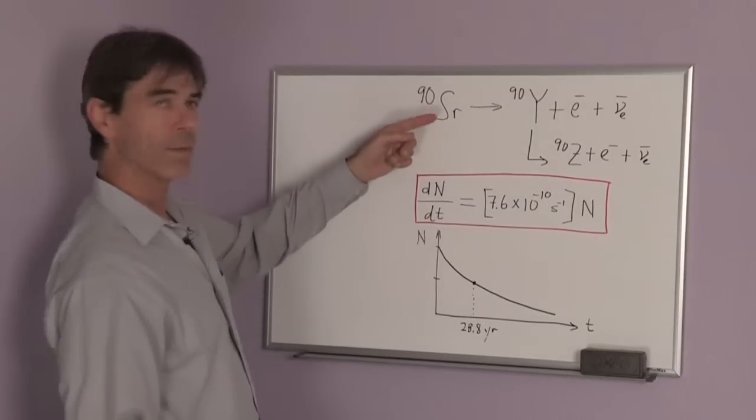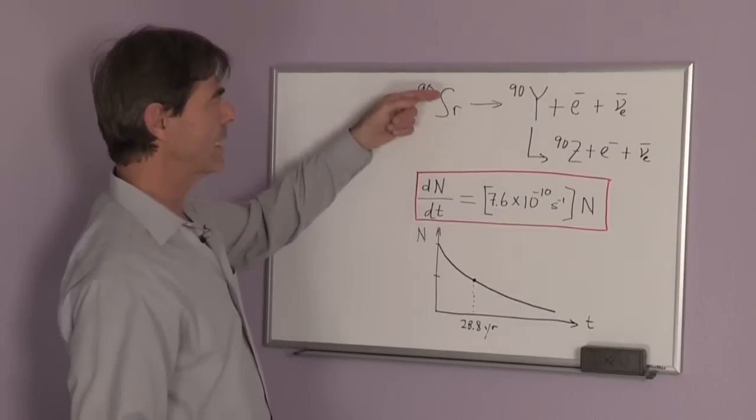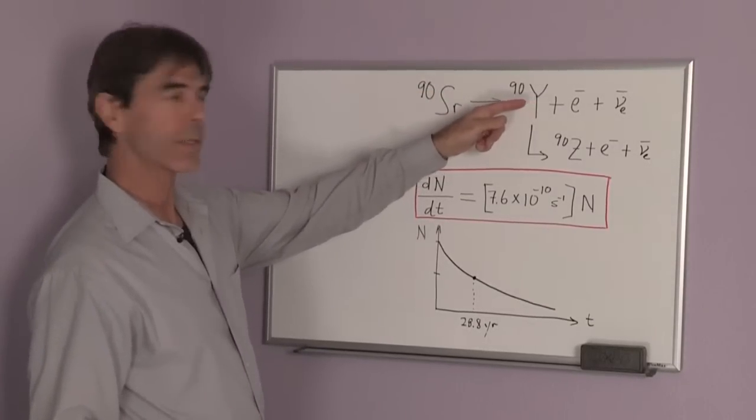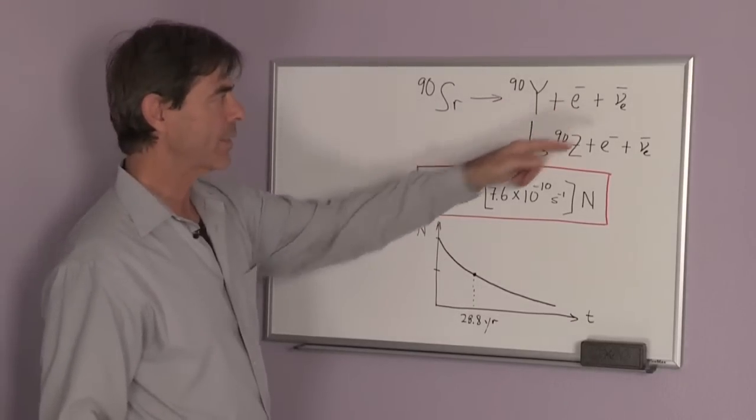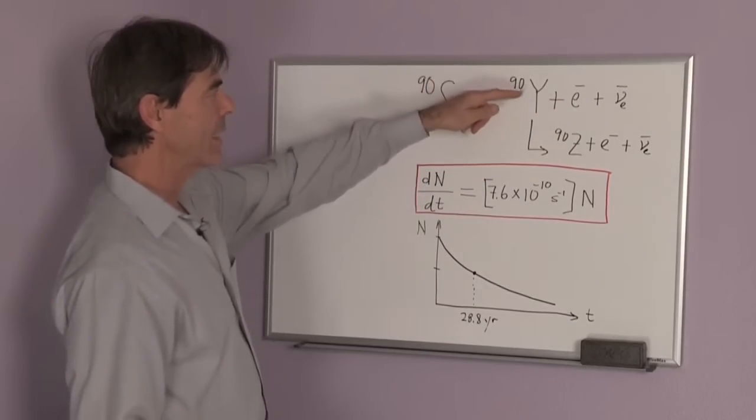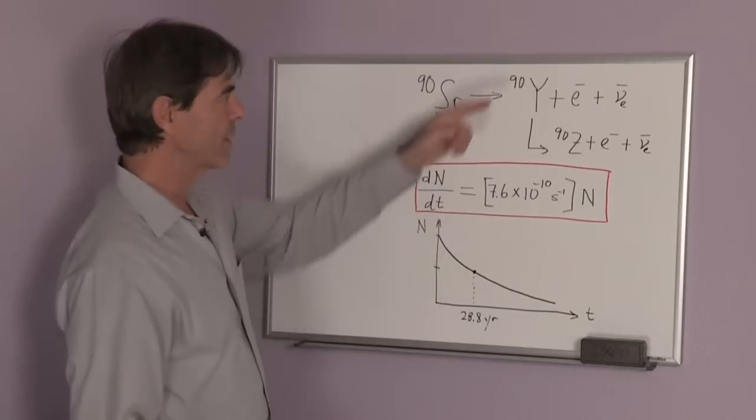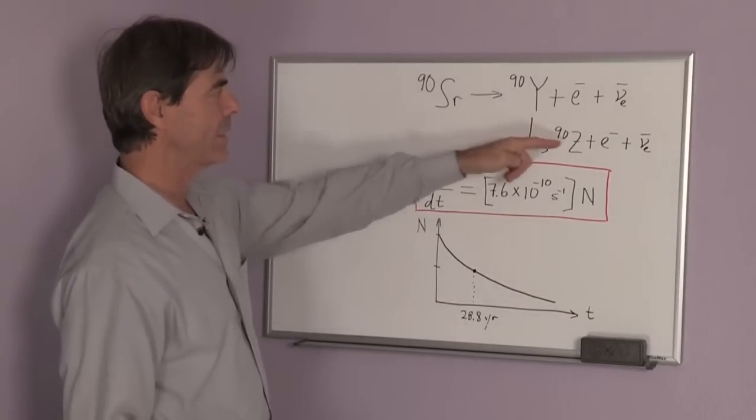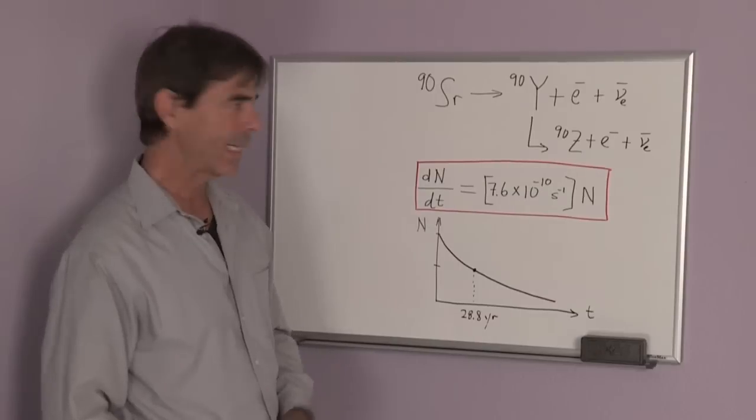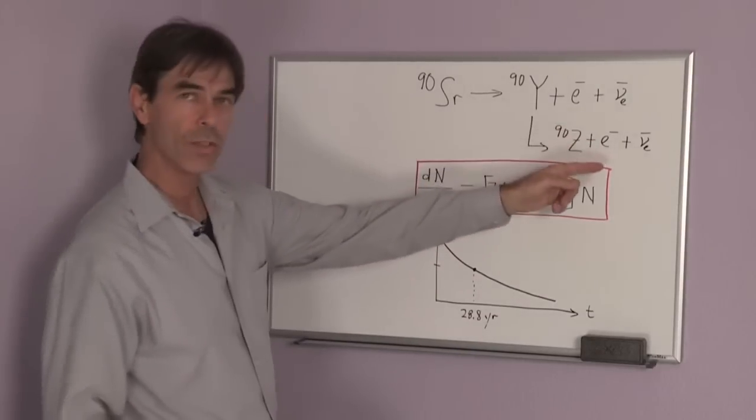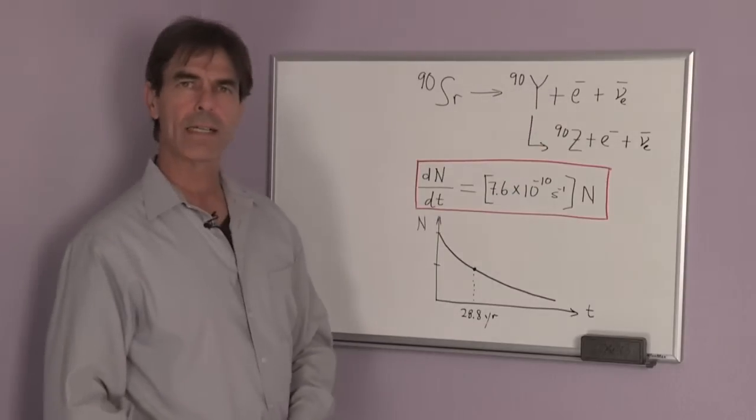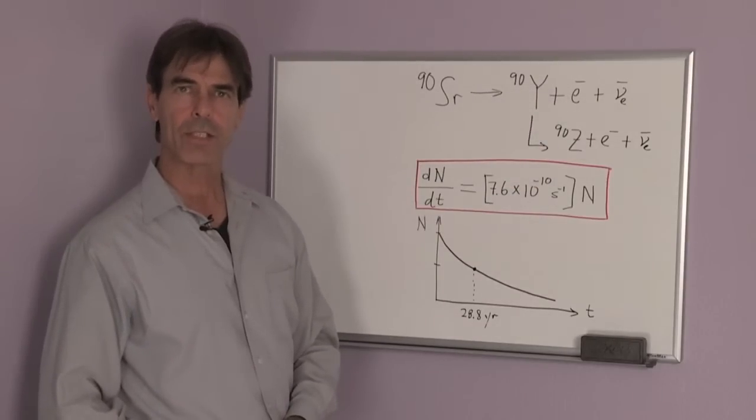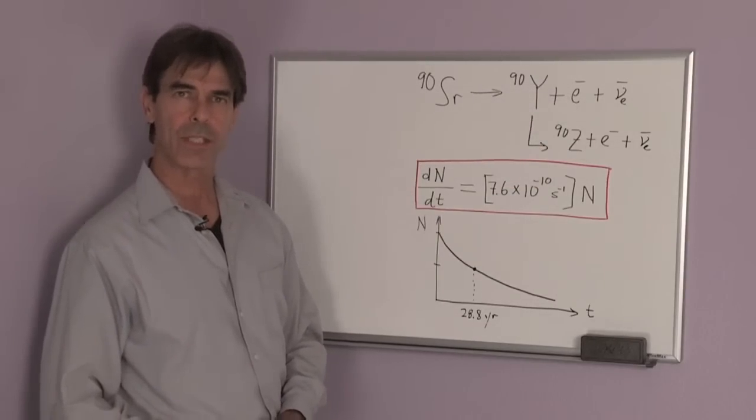So strontium-90, which has the symbol Sr, decays into yttrium-90 plus an energetic electron and a neutrino. Yttrium-90 is itself radioactive and decays into zirconium-90 plus an electron, also very energetic. It's these energetic electrons that can do damage to tissue and genetic material.